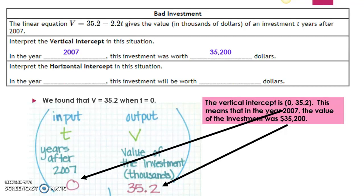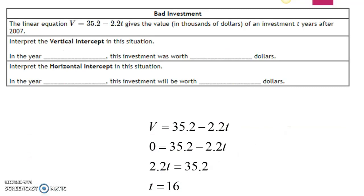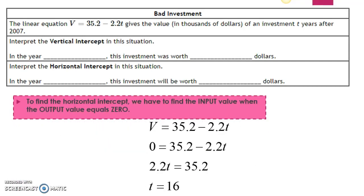Not bad, but let's figure out why this is really called a bad investment. Now let's look at the horizontal intercept. To find the horizontal intercept, we have to find the input value when the output value equals zero. This means we have to find t when v equals zero. So we start by writing out our original equation and substituting the output variable with zero: zero equals 35.2 minus 2.2t.